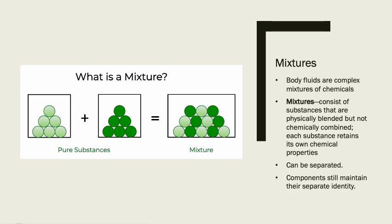When we mix things into water, we create different types of mixtures. Mixtures are a complex mix of chemicals — substances physically blended but not chemically combined. Each substance retains its own chemical properties and can be separated back out. A mixture is like a bucket of Legos: all mixed together, but you can identify every color and shape and separate them. A mixture is a physical mix with no chemical combination — if you melt the Legos into mush, that would be a chemical change and you couldn't separate them.